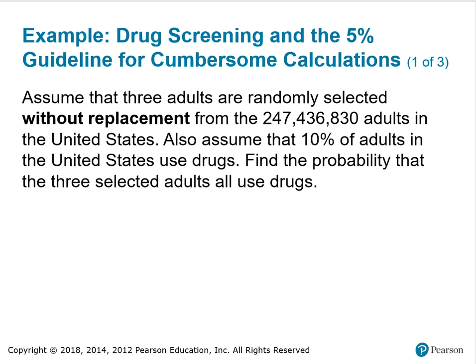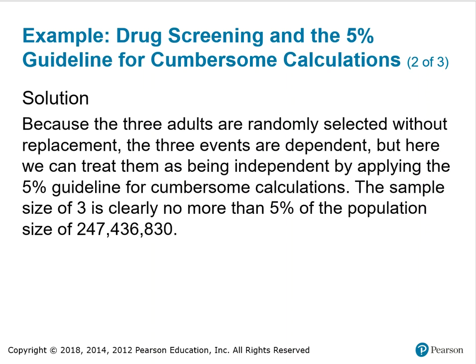Example: drug screening and the 5% guideline for cumbersome calculations. Assume that three adults are randomly selected without replacement from the 247,436,830 adults in the United States, according to the author. Also assume that 10% of adults in the United States use drugs. Find the probability that the three selected adults all use drugs. Because the three adults are randomly selected without replacement, the three events are dependent. But here we can treat them as being independent, so we don't have to reduce any of the numbers in the fractions before we multiply them, by applying the 5% guideline for cumbersome calculations.